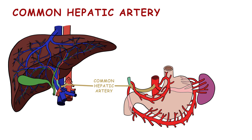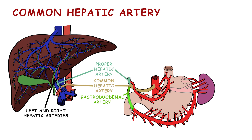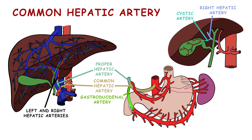The common hepatic artery, the last branch of the celiac trunk, further divides into the proper hepatic artery and the gastroduodenal artery. The proper hepatic artery supplies the liver and gives rise to the left and right hepatic arteries. The hepatic artery system is responsible for delivering oxygenated blood to hepatocytes, which is crucial for their metabolic functions. The proper hepatic artery also gives off the cystic artery, which supplies blood to the gallbladder.